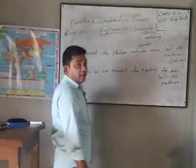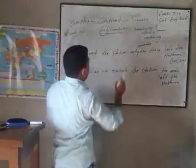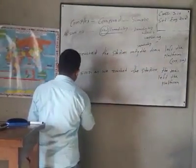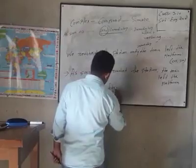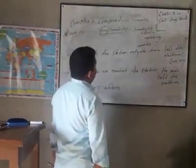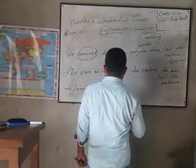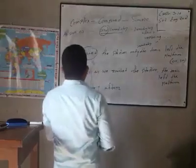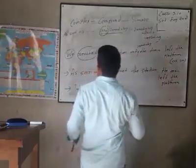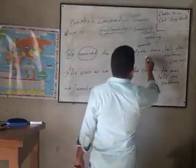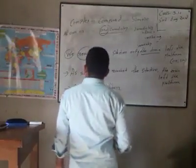Now I will write the simple sentence. First of all, you have to use 'immediately after,' then verb plus '-ing.' Look — here the subjects in the two clauses are different: here the subject is 'we' and here the subject is 'the train.' So you have to use the noun form here.